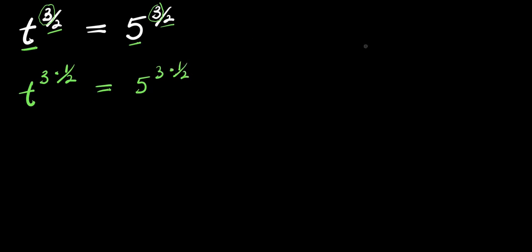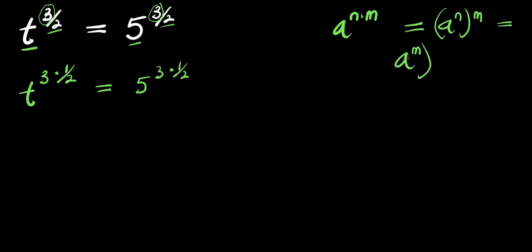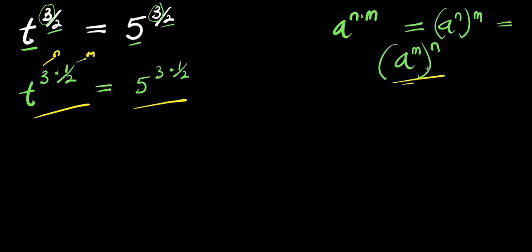Now let's consider this identity: if you have a to the power of m times n, you can express it as (a^m)^n or (a^n)^m. In this equation, the 3 is our n and 1/2 is our m. I'm going to apply this identity — the m is inside the bracket while the n is outside.